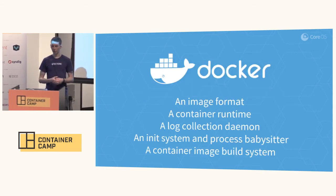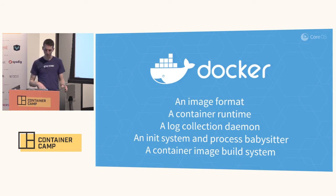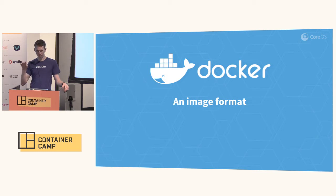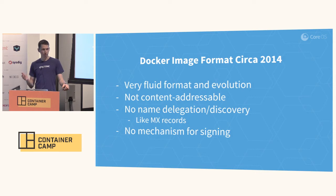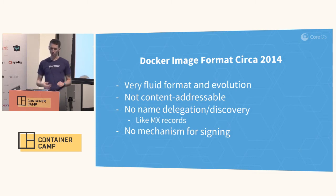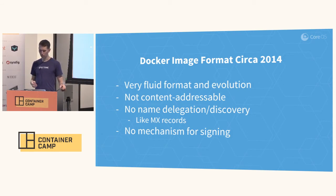We're all familiar with Docker. Docker is a collection of a number of things — it's an image format, it's a container runtime, it's a log collection daemon, it's an init process, until this most recent release it includes an init process, it's a container image build system — it's a lot of stuff. But really what we're going to be talking about here today is just the image format. So 17 months ago we started with this Docker image format, circa 2014. It's very fluid, and fluidity is not something that you would necessarily want going forward long-term inside of a format. The fluidity was natural because the project was young. It wasn't content-addressable, which is a bit of a problem — if Alice wants to sign the image, you can't, because there's nothing to sign because it doesn't have a hash that's well known for that image.